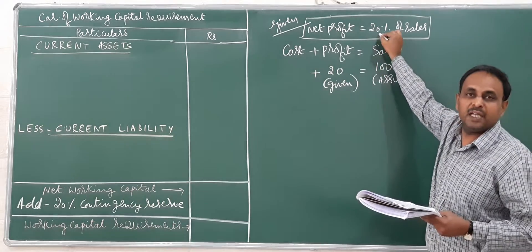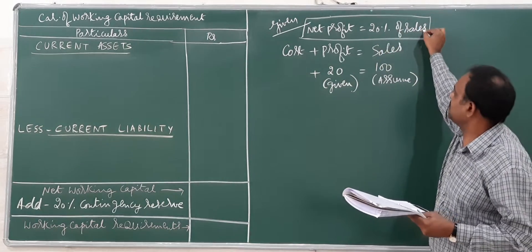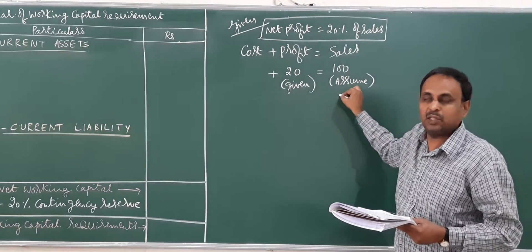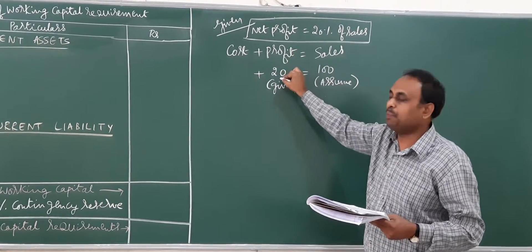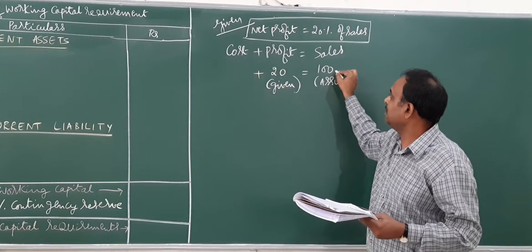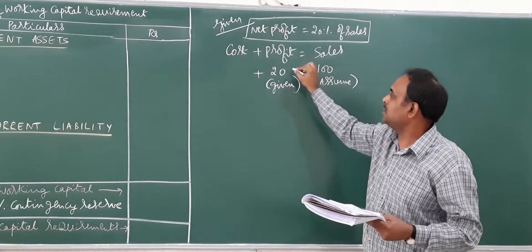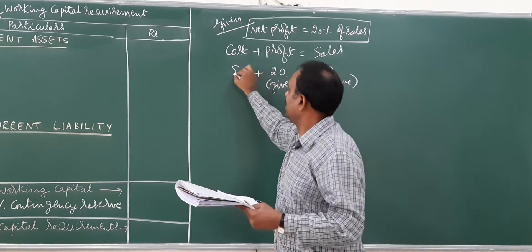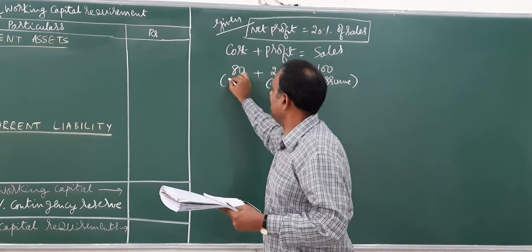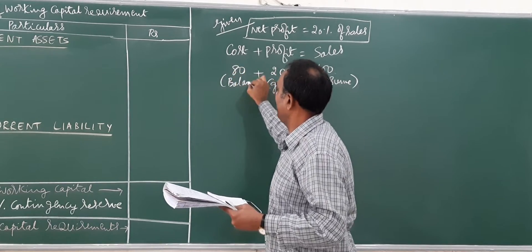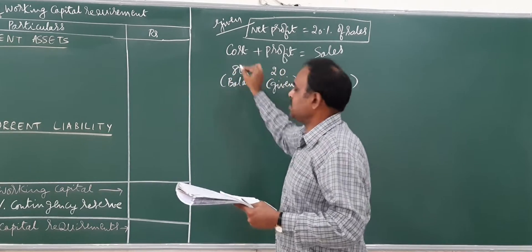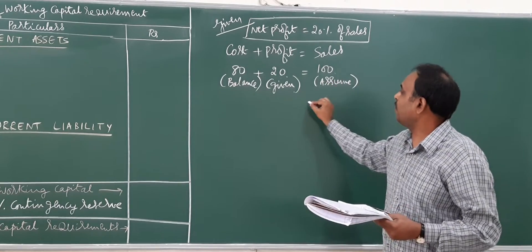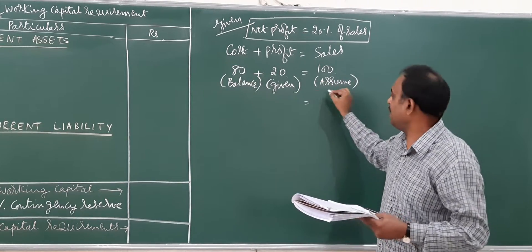Let us go one by one. In the previous problems, net profit is twenty percent of sales. Always assume sales is one hundred percent. Profit is twenty percent given, so if hundred is the sales, twenty percent is the profit, and the cost will be the balance — eighty percent. Here the sales volume in amount is not given, which we have to find.